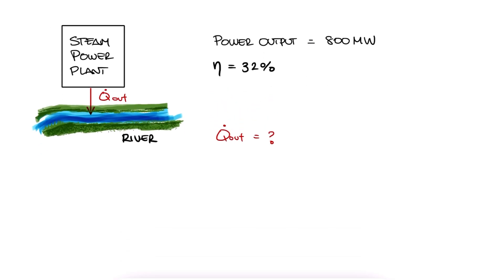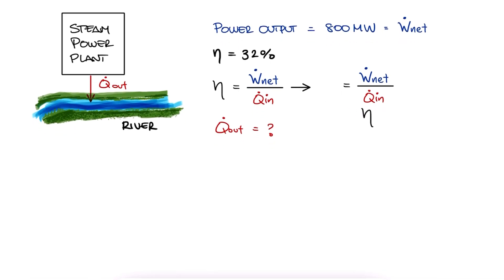We know that the efficiency is the net output power over the heat rate coming in. This means that we can find the heat rate coming in as w.net over the efficiency. We substitute the given values to find this heat coming in.